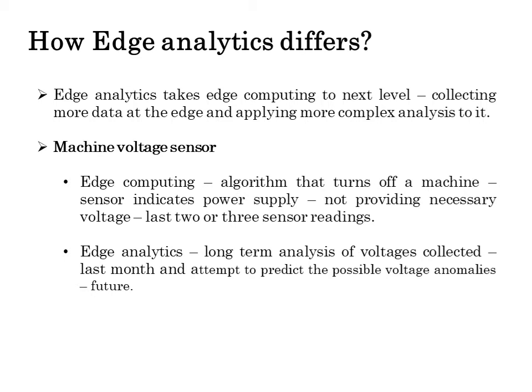For example, consider a machine voltage sensor leveraging edge analytics. Edge computing might apply an algorithm that turns off a machine if the sensor indicates that the power supply is not providing the necessary voltage based on the last two or three sensor readings. But edge analytics will perform long-term analysis of voltages collected over the last month and attempt to predict possible voltage anomalies in the near future, thus making a complex analysis. This is how edge analytics differs from edge computing.